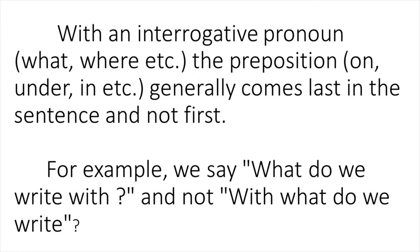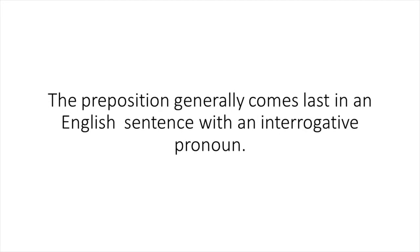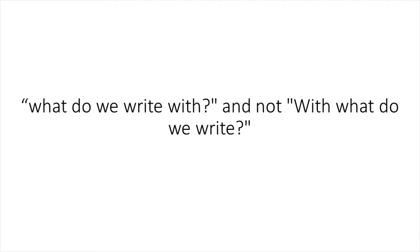With an interrogative pronoun — what, where, etc. — the preposition on, under, in, etc. generally comes last in the sentence and not first. For example, we say 'what do we write with' and not 'with what do we write.' Where does the preposition generally come in an English sentence with an interrogative pronoun? The preposition generally comes last in an English sentence with an interrogative pronoun. Give me an example, please. 'What do we write with' and not 'with what do we write.'